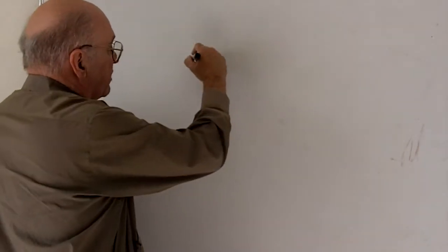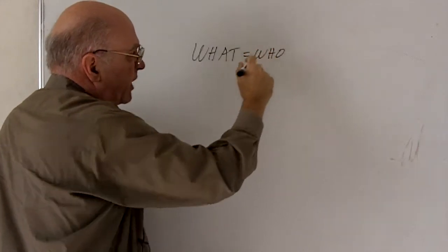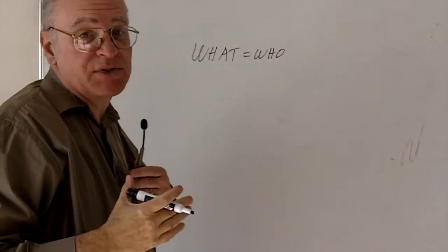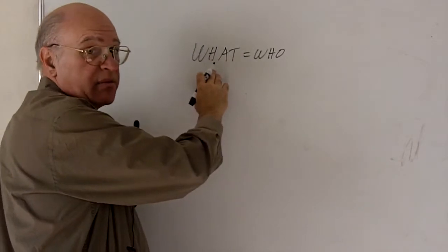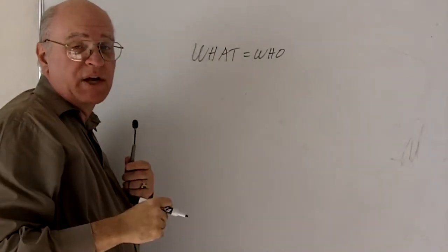Remember, our basic accounting equation is what equals who. Accountants actually use fancier words. On the what side, they talk about assets. On the who side, they talk about liabilities and owner's equity.